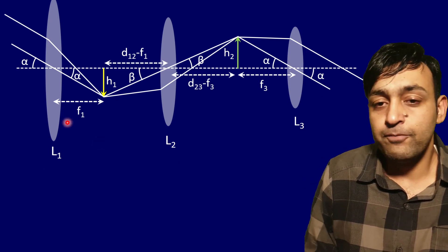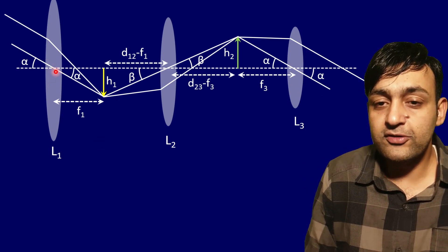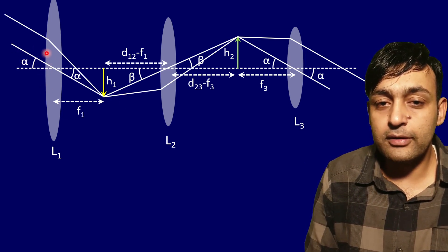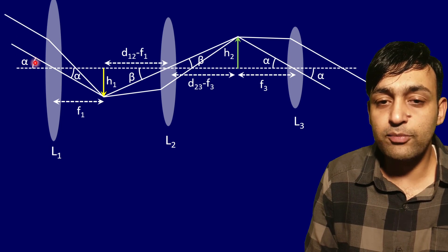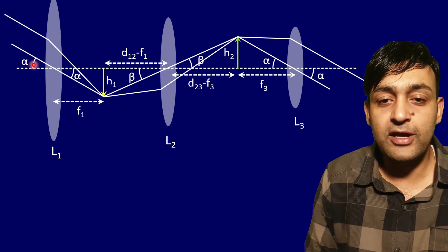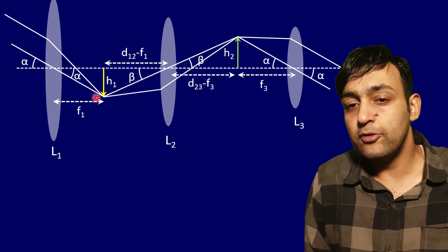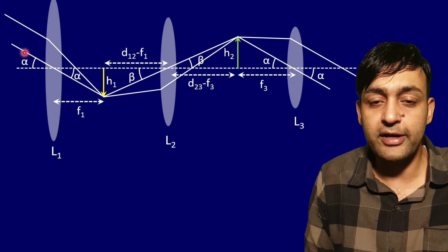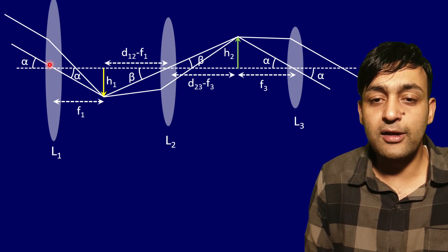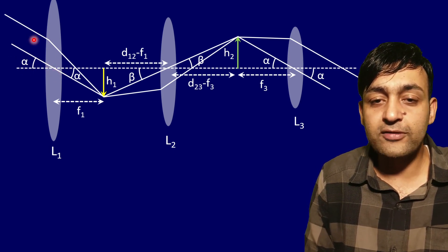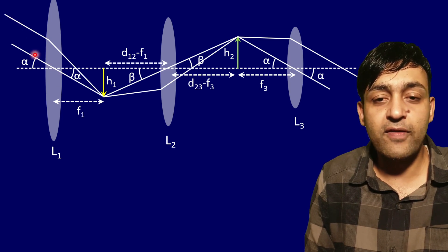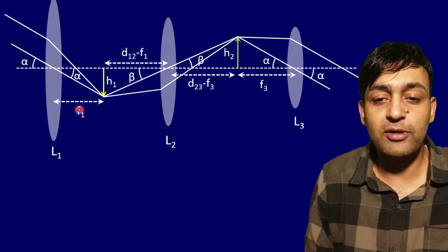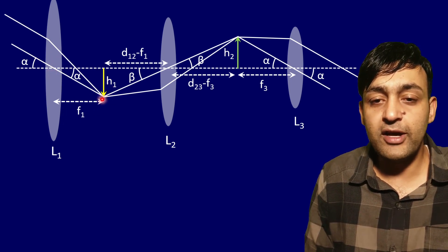Now coming to the solution, this is the ray diagram that will happen. On this lens L1, this beam is making angle alpha - obviously this angle alpha is very small but just for the sake of the solution we have to make some considerable angle. Since this is coming from infinity, this will focus on the focal plane at distance f1 from lens L1.